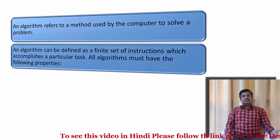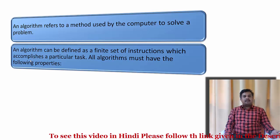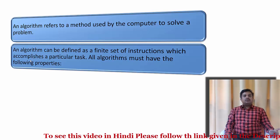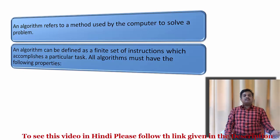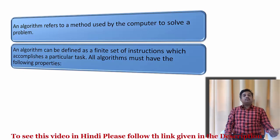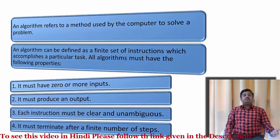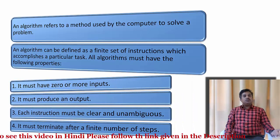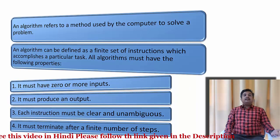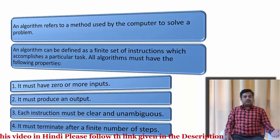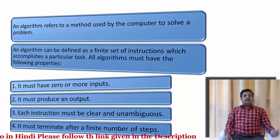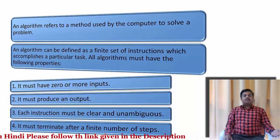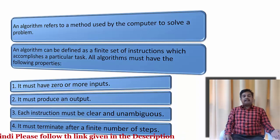Can any step-by-step process be an algorithm? No. Basically there are few properties; if those are satisfied, we say it is an algorithm. The properties are: it must have 0 or more inputs, it must produce an output, each instruction must be clear and unambiguous, and it must terminate after a finite number of steps. This is what an algorithm is.